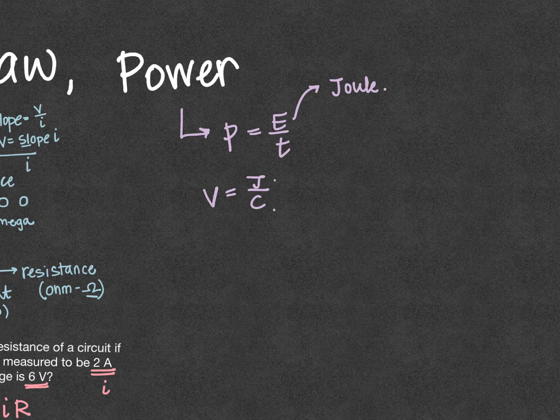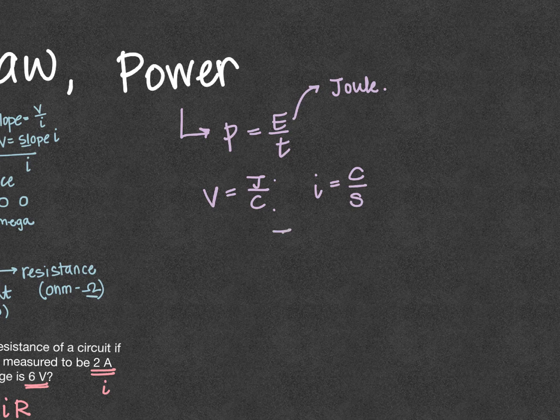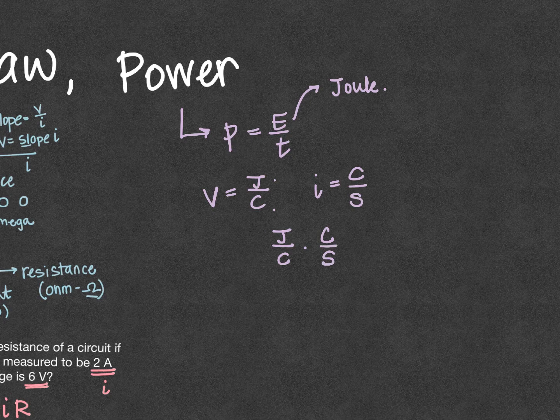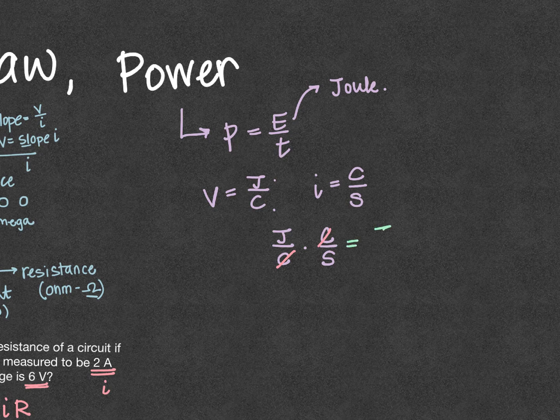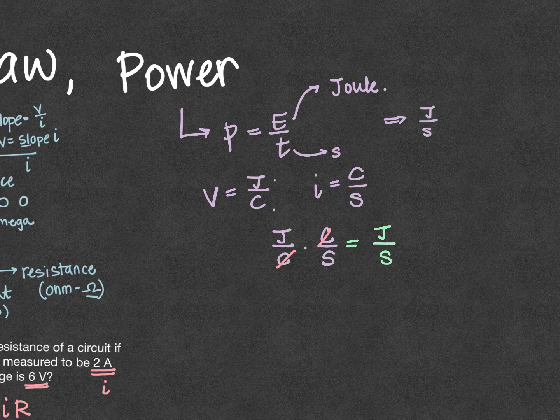So if we take our current, which is coulombs per second, and we multiply them by each other, we would have joules per coulomb times coulombs per second. If we multiply those, our coulombs will cancel out and we'll be left with joules per second. So power is measured in joules per second.